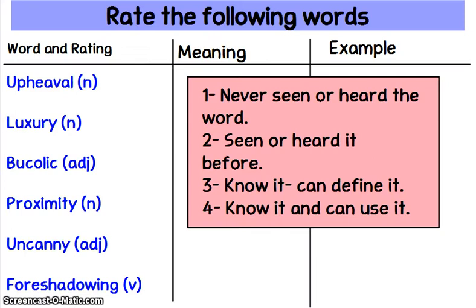So the first thing you want to do is take your vocabulary sheet and rate each of the vocabulary words. Remember, four means you're an expert on the word, and one means you've never seen or heard the word before. Our first word is upheaval, second is luxury, third is bucolic, fourth is proximity, fifth is uncanny, and sixth is foreshadowing. Take a moment to circle the ratings for each of the words.